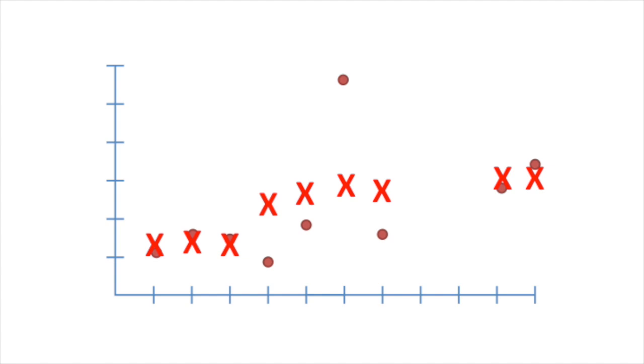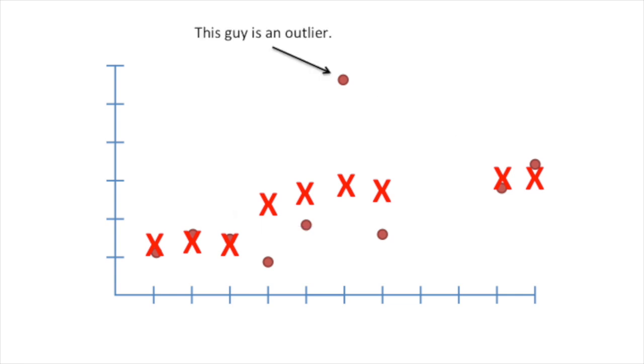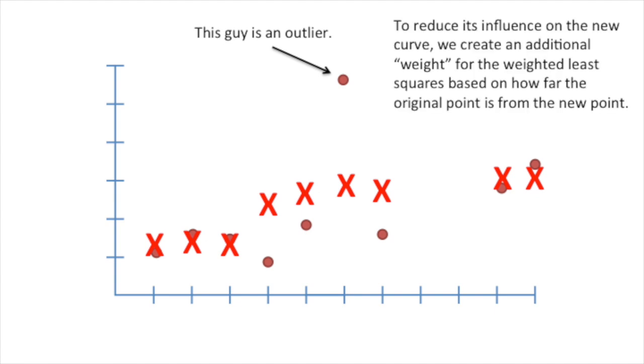Here are all the new points that we created using weighted least squares and a sliding window. Remember when I said these points were preliminary? These points were all pulled up by this guy. This guy is an outlier. To reduce its influence on the new curve, we create an additional weight for the weighted least squares based on how far the original point is from the new point.